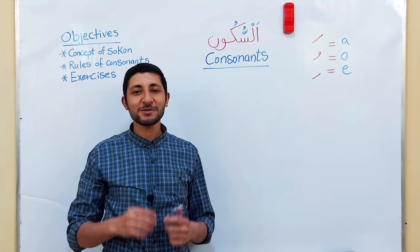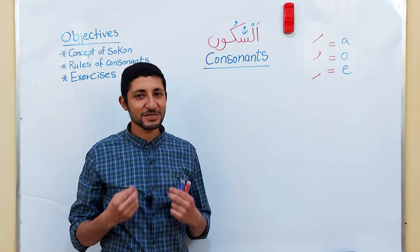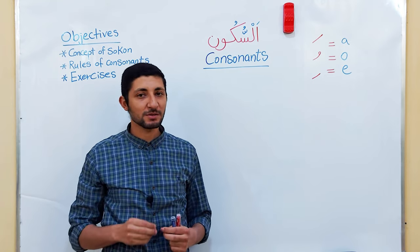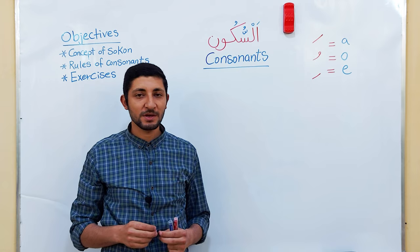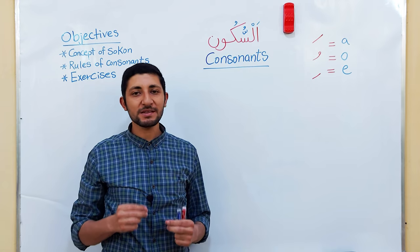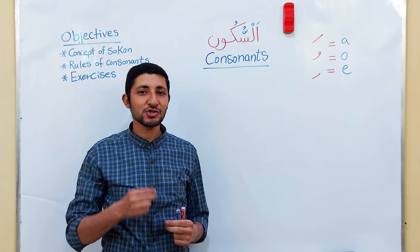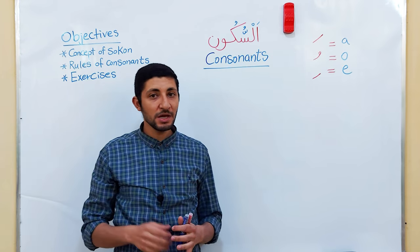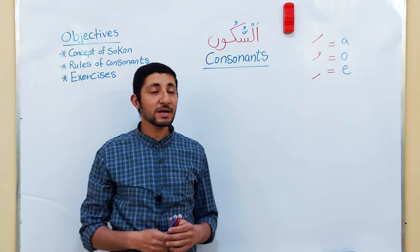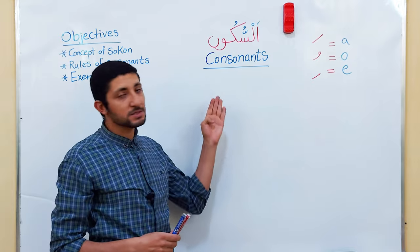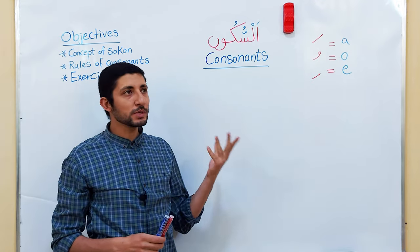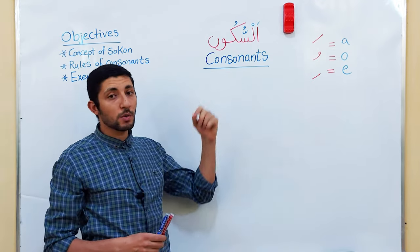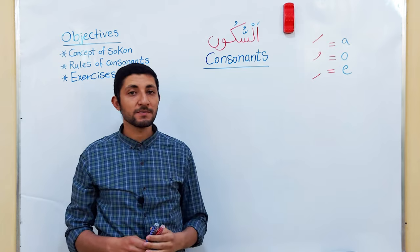Hey guys, welcome back to my channel. This is Mustafa Nasr again and you are watching Arabic for Nance. This is the second lesson in the Essential Reading Course. Today we will be talking about consonants in Arabic, which we call As-Sukoon or Sukoon.